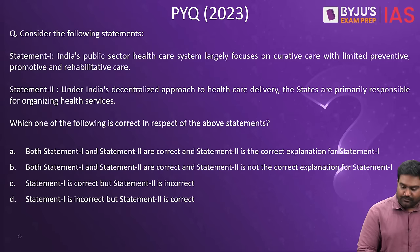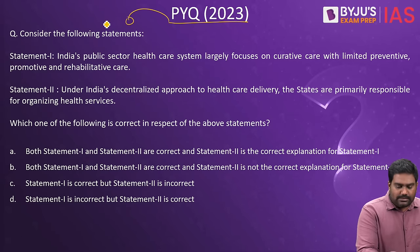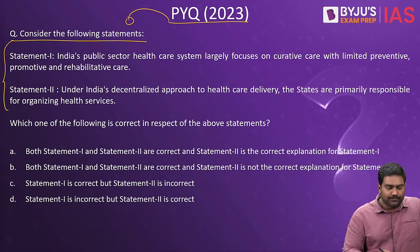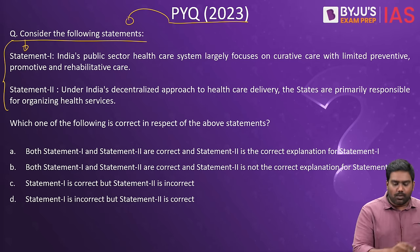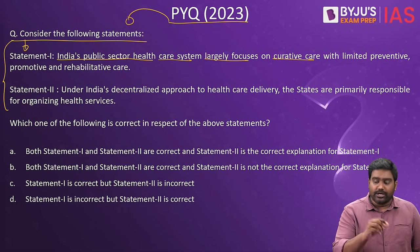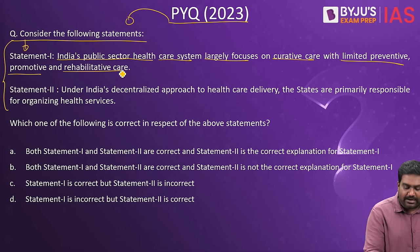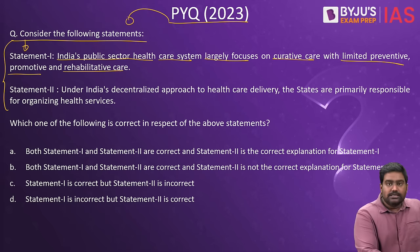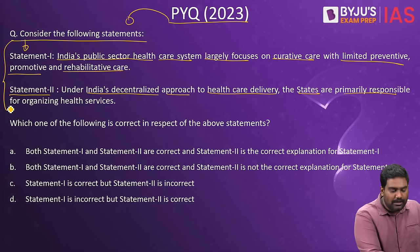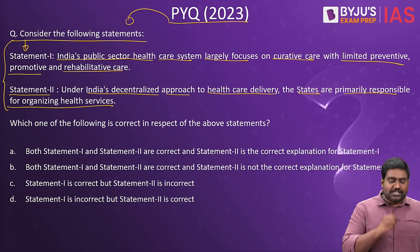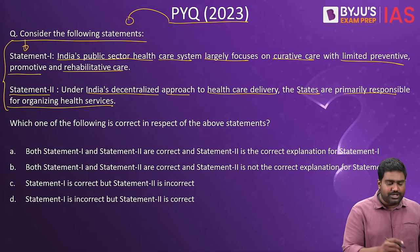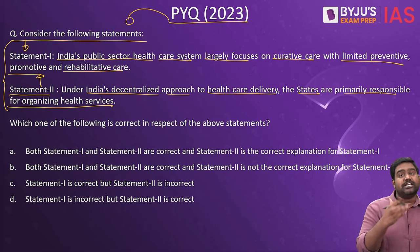Let's take up a prelims question from the 2023 prelims paper — an assertion-reasoning kind of question. Statement one: India's public sector healthcare system largely focuses on curative care with limited preventive, promotive, and rehabilitative care. Statement two: Under India's decentralized approach to healthcare delivery, the states are primarily responsible for organizing health services. We should check independently whether each statement is correct or incorrect, and then check whether statement two is the correct explanation for statement one.